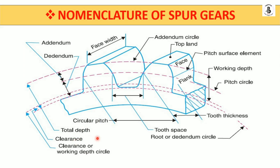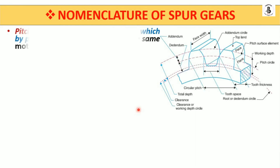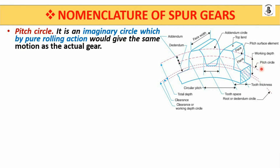Starting with the terminology — the pitch circle. The pitch circle is nothing but an imaginary circle when the actual gears are rolling on each other. In simple terms, it is an imaginary circle which, by pure rolling action — when one gear is meshing with another gear for power transmission or motion transmission — that pure rolling action occurs, and the trajectory of that imaginary circle is known as the pitch circle.